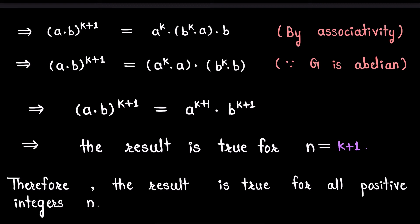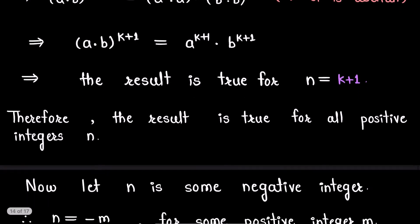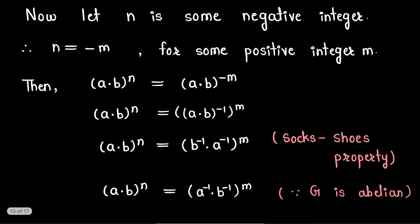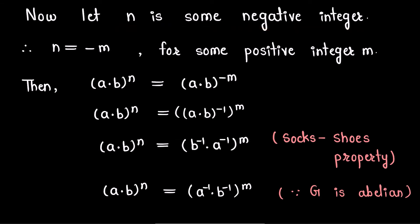Up till now we have shown that the result is true for n = 0 and for all positive integers. It remains to show that the result is true for all negative integers. Let n be some negative integer. Therefore n = −m for some positive integer m.